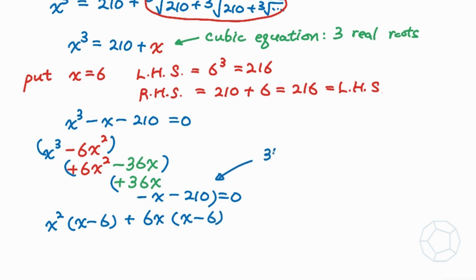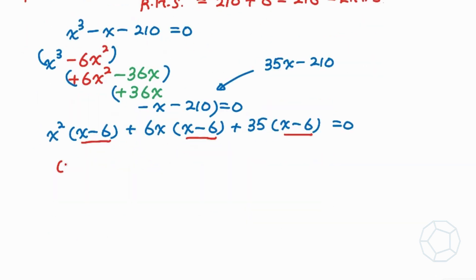For the final bracket which is 35x minus 210, we can take out the common factor 35 to obtain x minus 6 as well. It is equal to zero. Now for the three groups, x minus 6 is a common factor so we can take it out.